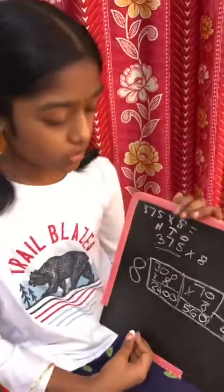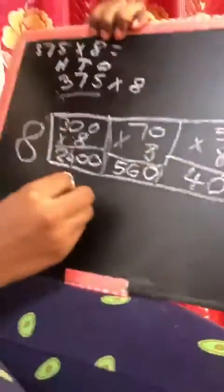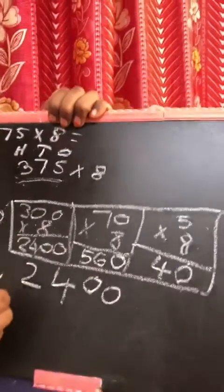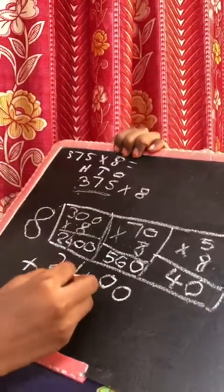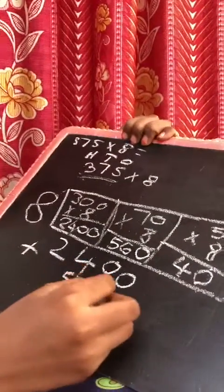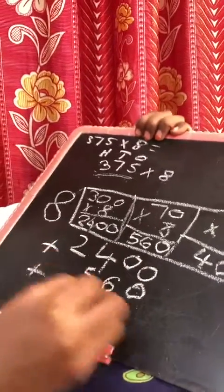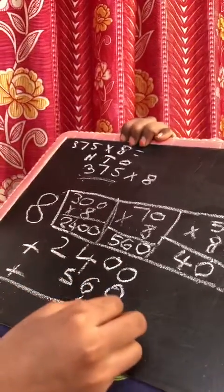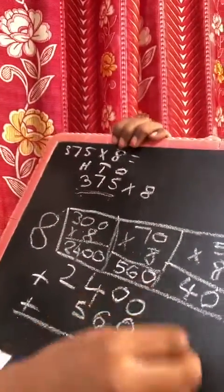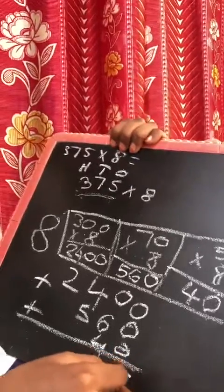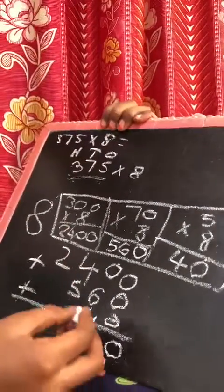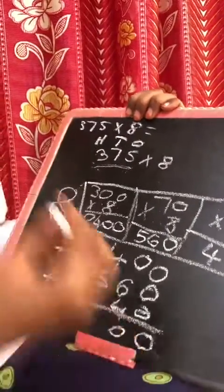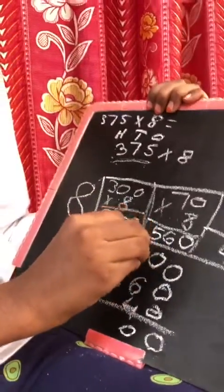Then add all those answers. So 2,400 plus 560 plus 40. We are doing 0 plus 0 plus 0 is 0. 6 plus 4 is 10. 10 plus 0 is 10. Put 0 in the 10's place and 1 in the 100's place.